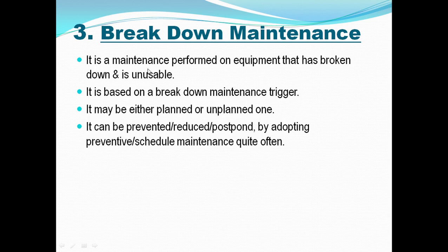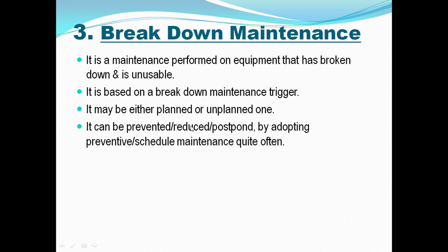The last type is breakdown maintenance. It is maintenance performed on equipment that has already broken down, and it is unplanned. It is based on a breakdown trigger. It may be planned or unplanned — suppose a machine suddenly fails because we had no warning. These major breakdowns can be reduced or postponed by adopting preventive and scheduled maintenance quite often.